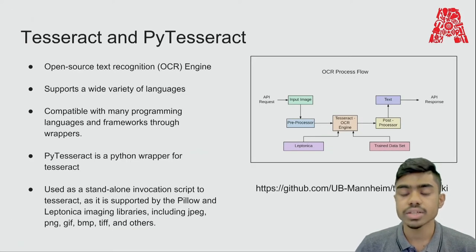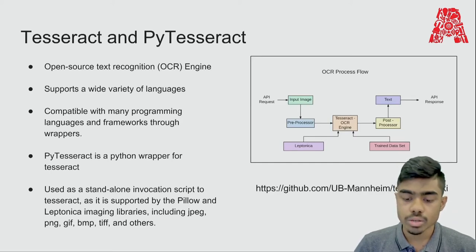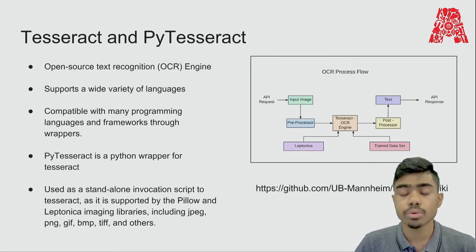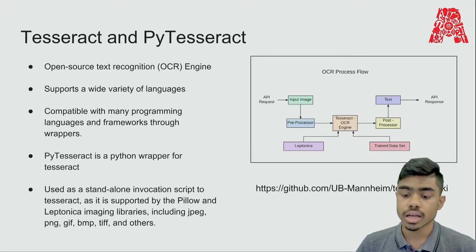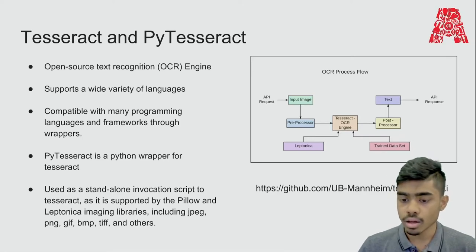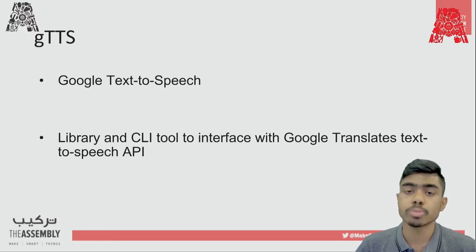What is Tesseract and PyTesseract? Tesseract is a pre-trained open source text recognition engine. It supports a wide variety of spoken languages and is compatible with many programming languages through frameworks which also contain wrappers. For this workshop we'll be using PyTesseract, which is a Python wrapper for Tesseract. PyTesseract can also be used as a standalone invocation script supported by the Pillow and Leptonica imaging libraries, including JPEG, PNG and other formats. We also move on to Google Text to Speech, which is a library and CLI tool to interface with Google Translate's Text to Speech API.